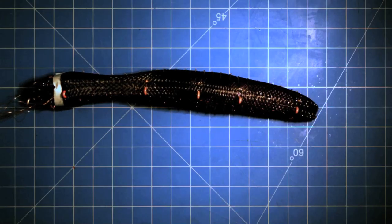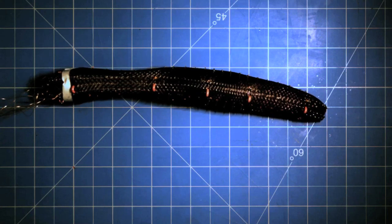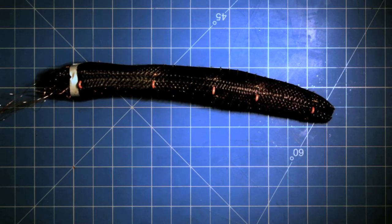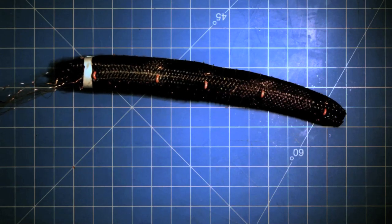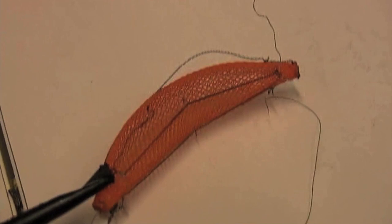The robot, made almost entirely of soft materials, is named meshworm for the flexible, mesh-like tube that makes up its body. Mechanical engineer Sangbae Kim and his colleagues looked to nature, and specifically the earthworm, for design inspiration.